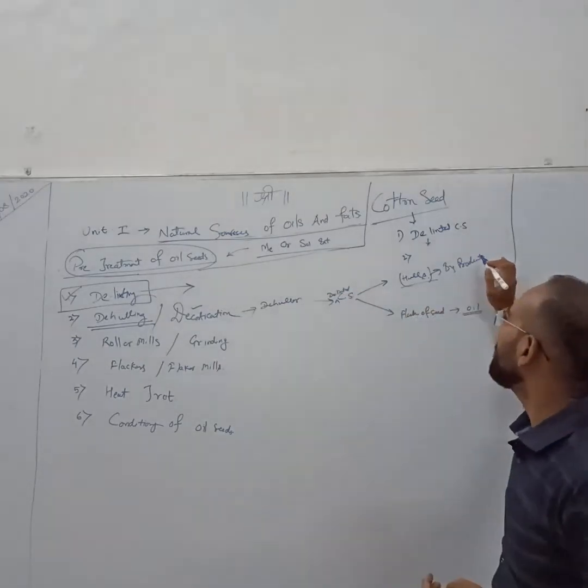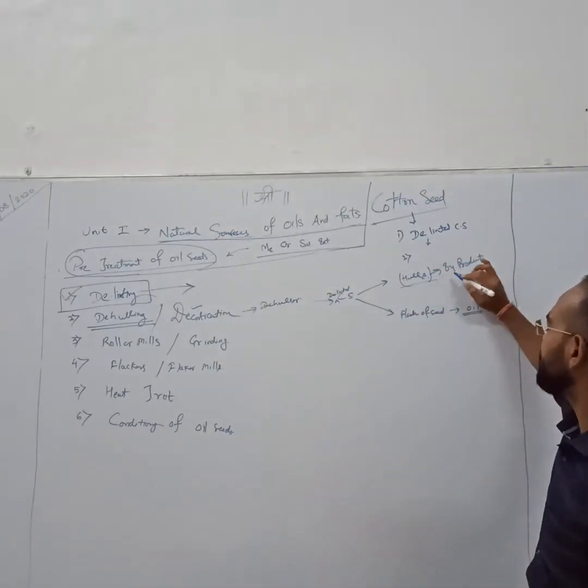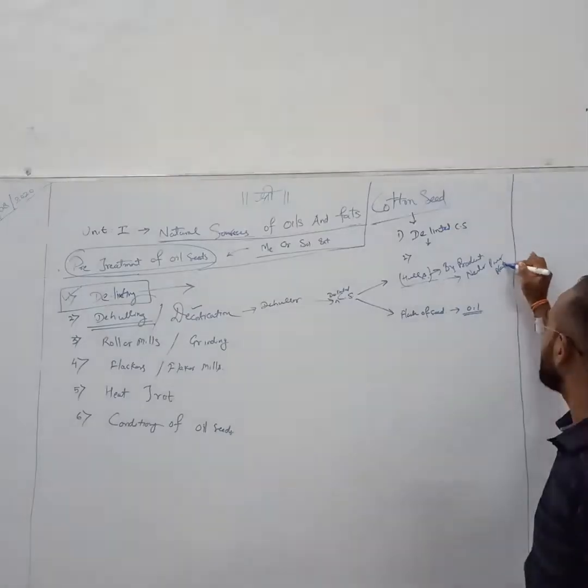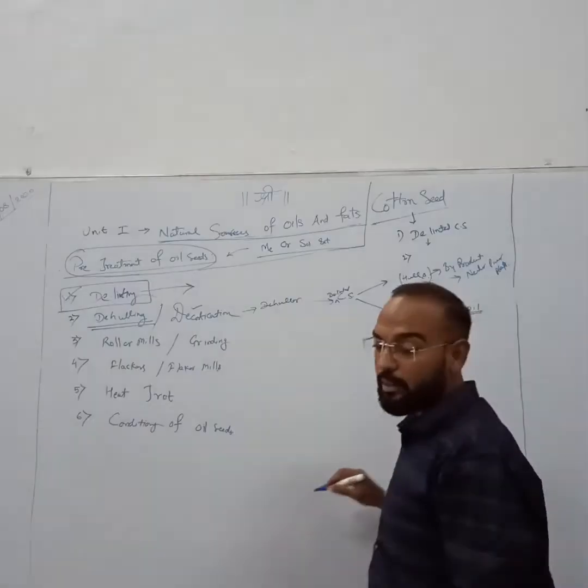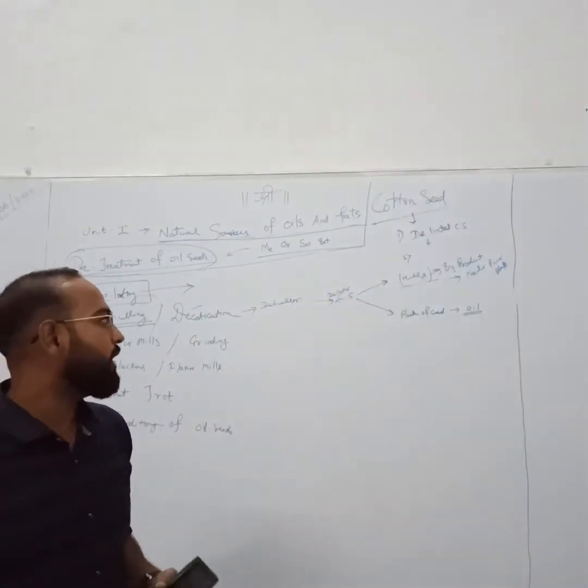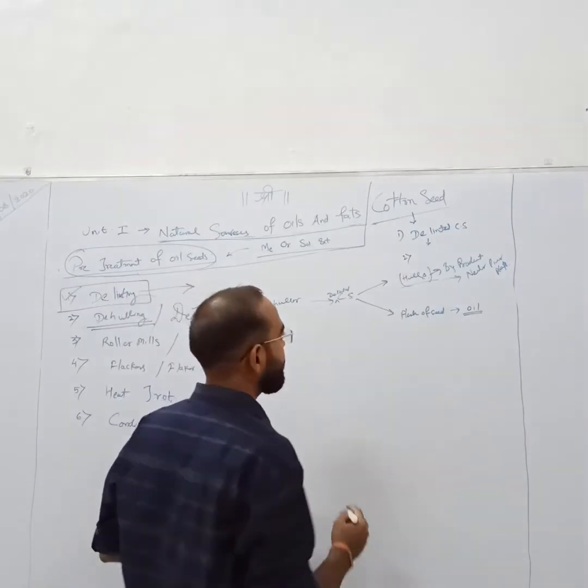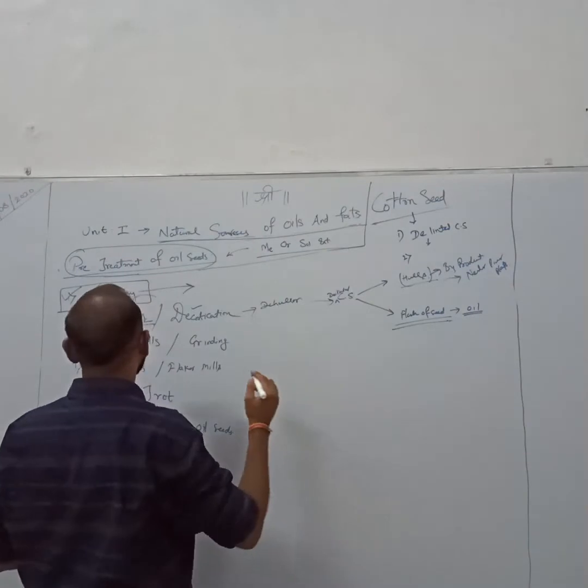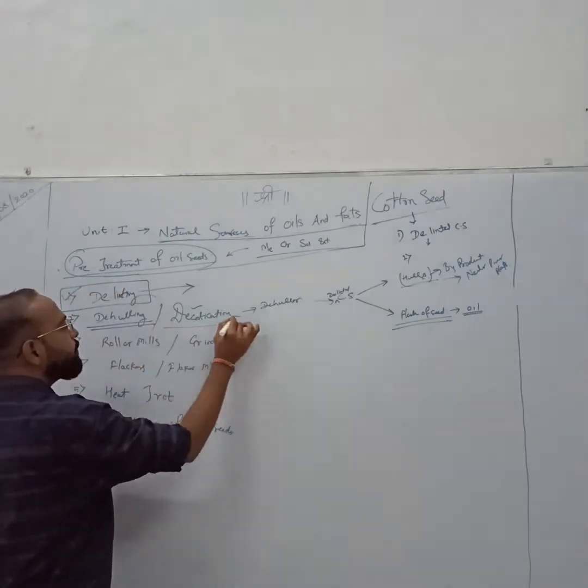Hulls of cotton seed is quite useful in nuclear power. Right now I don't remember the exact application of those hulls, but it is quite useful in nuclear power. And this flesh, flesh of seed we get here. This is a very delicate operation.